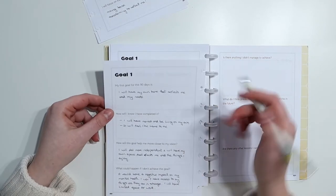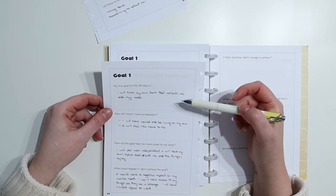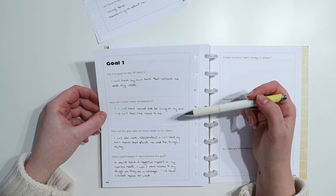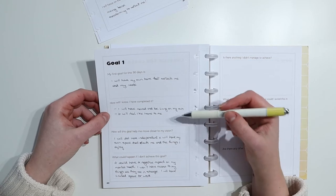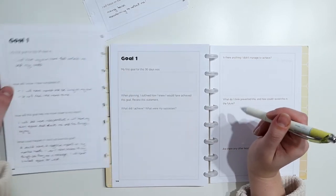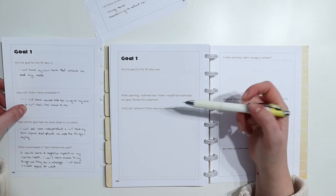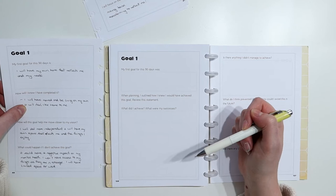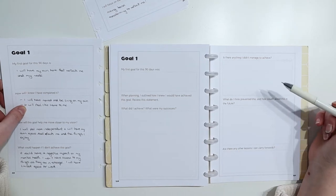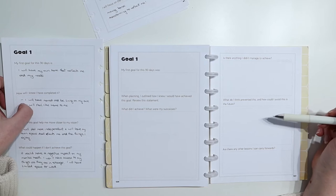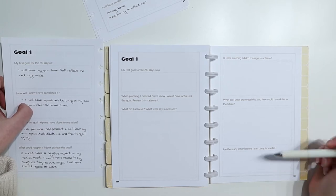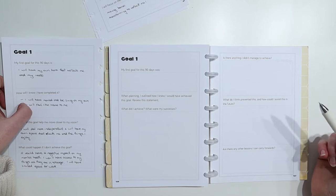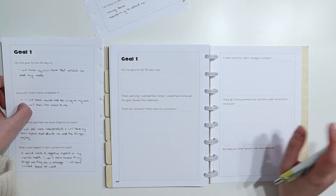So if we look, for example, my first goal was I will have my own home that reflects me and my needs. And how will I know I have completed it? I will have moved and be living on my own, check, and it will feel like home to me. Check. So I've reviewed that statement and then I will put what did I achieve and what were my successes? Is there anything I didn't manage to achieve? What do I think prevented this and how could I avoid this in the future? And then are there any other lessons I can carry forward? So I'm going to do that for my two goals and then I'm going to come back and show you what I wrote.